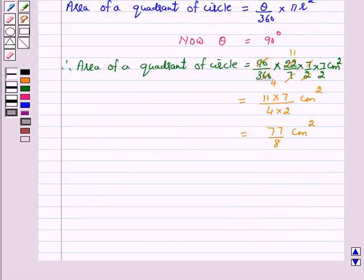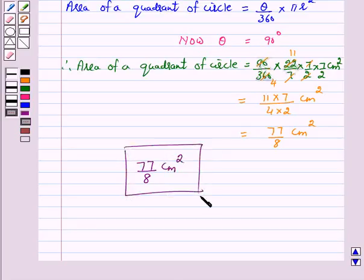Hence, the area of a quadrant of a circle whose circumference is 22 cm is 77 upon 8 cm square and this is our answer. I hope the solution is clear to you. Bye and take care.